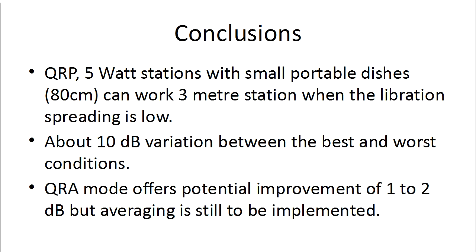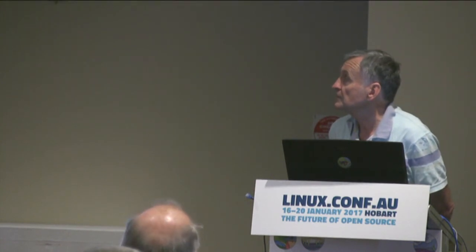My conclusions are that you can work 5-watt QRP between an 80 cm dish and a 3 metre dish when libration spreading is low. There's about 10 dB variation from best to worst conditions. The new QRA mode offers the potential of another 1 to 2 dB improvement, and averaging is still to be implemented which might do even a little bit better.